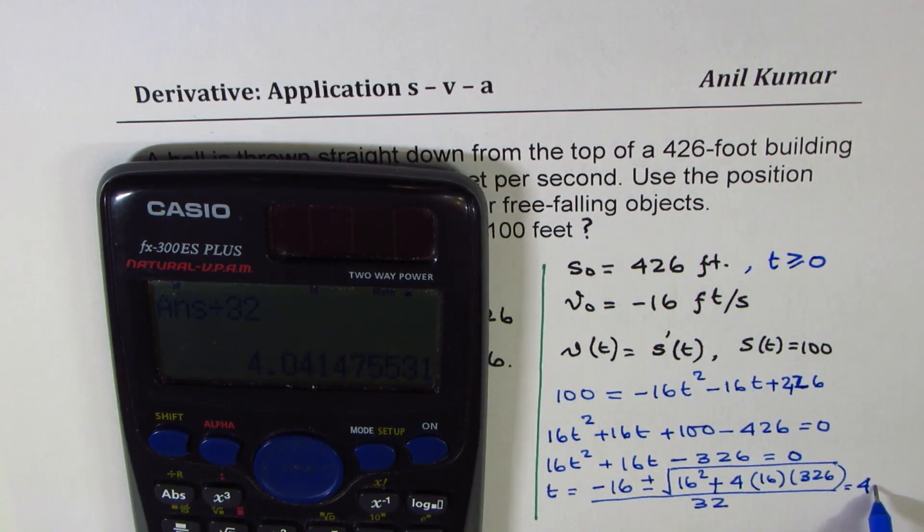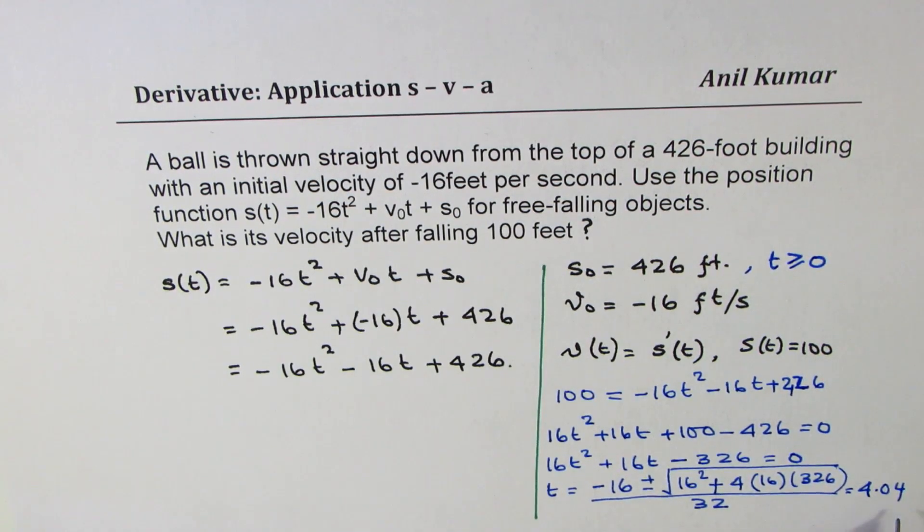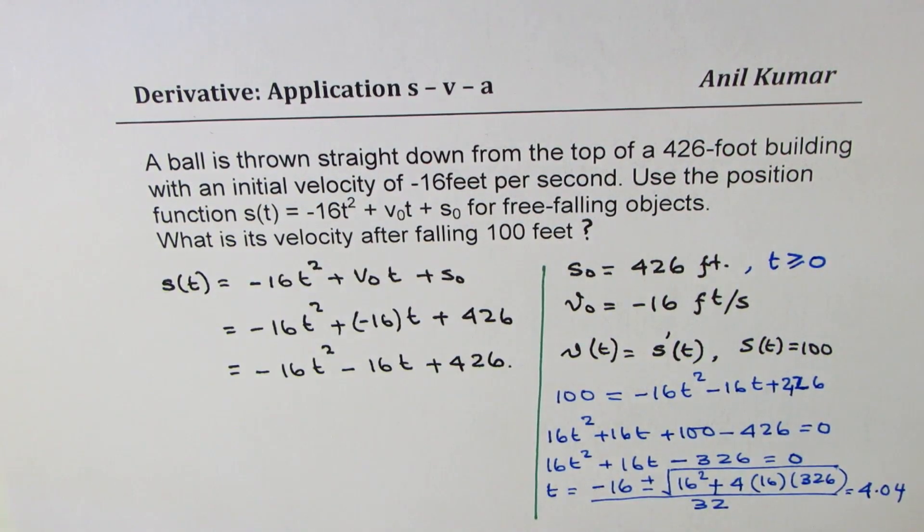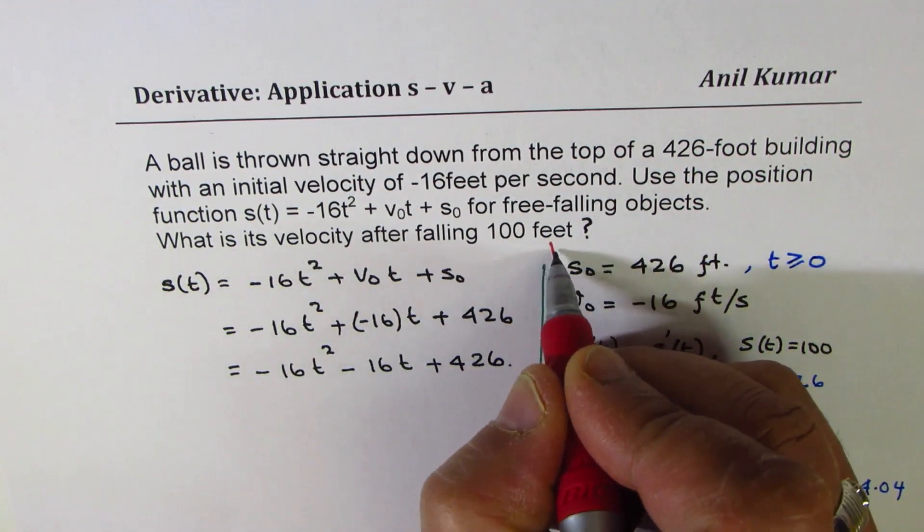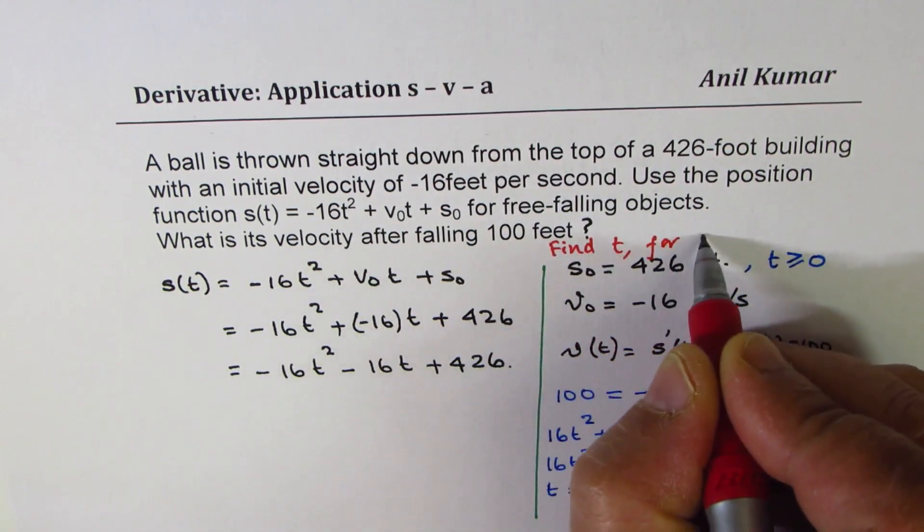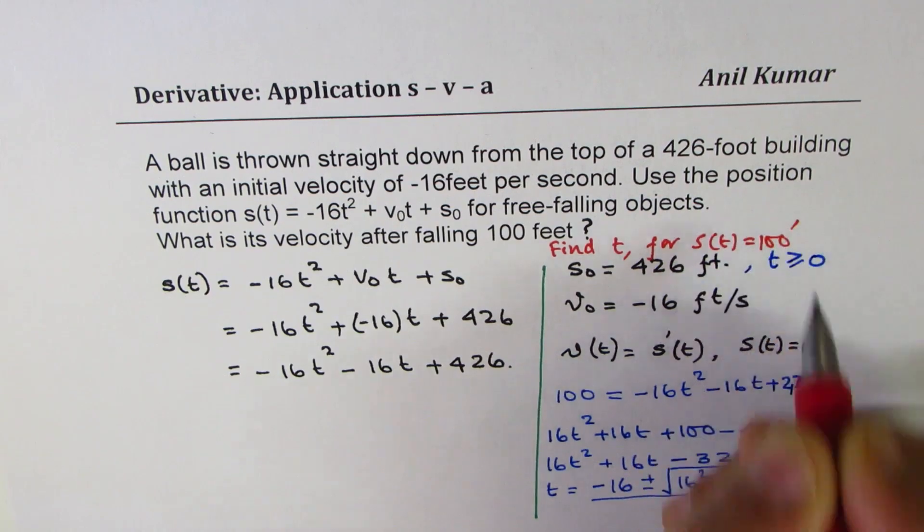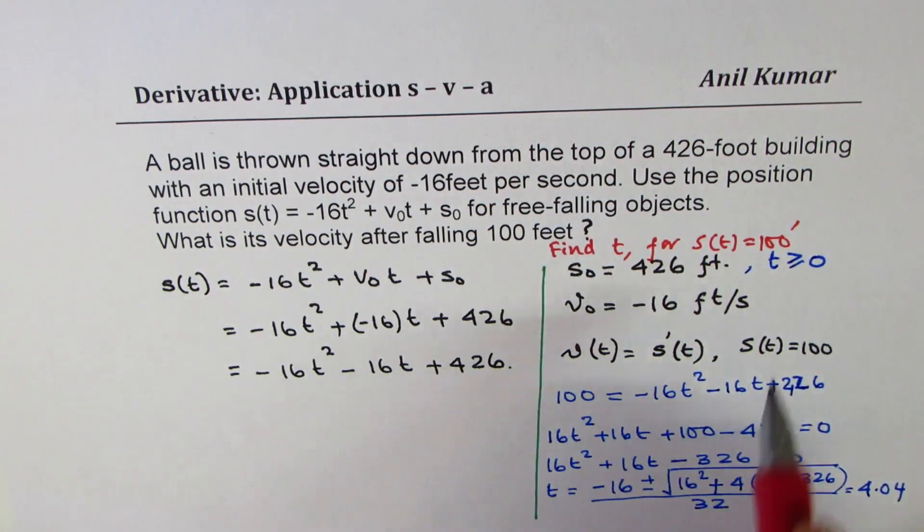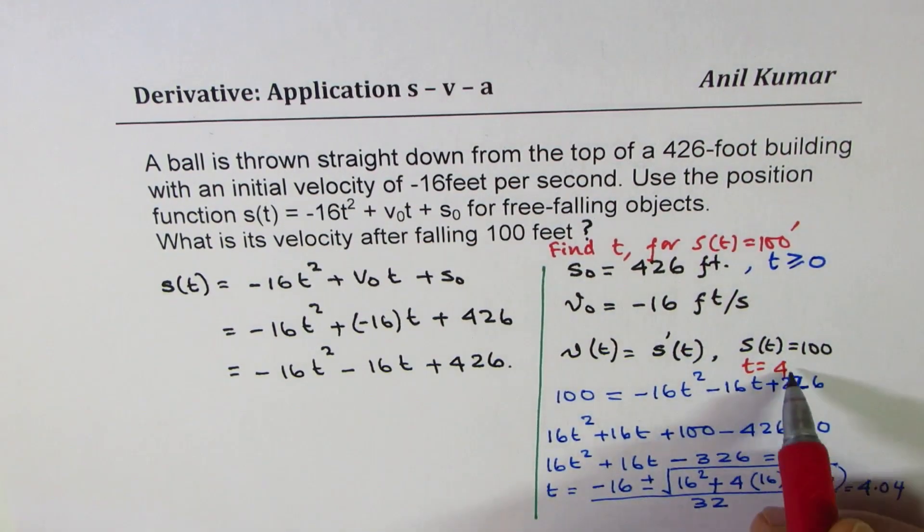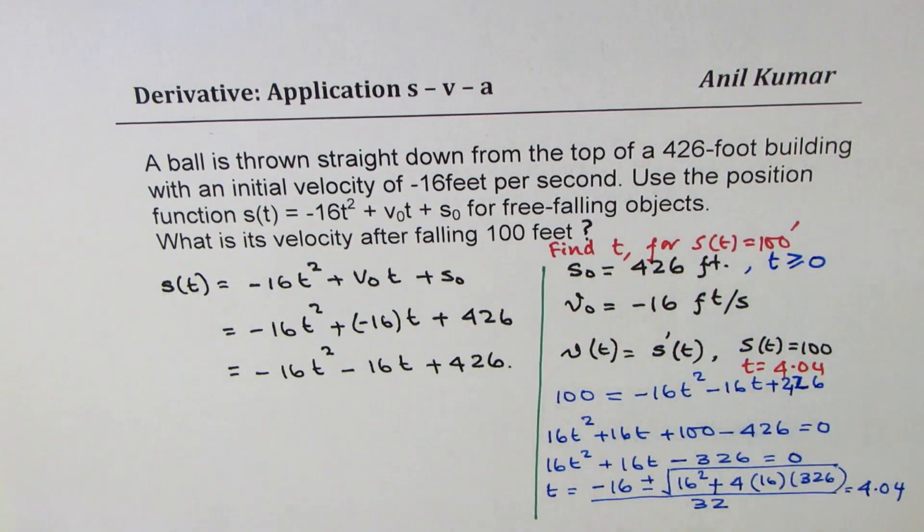And we will convert that to decimal numbers. We get 4.04. So 4.04 is the time when the height will be 100 feet. So that's the first part. First part here is to find time for s(t) equals to 100 feet. So we found that time t for this equals 4.04. You could use 4 now for your calculations.